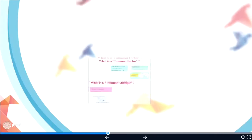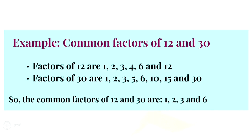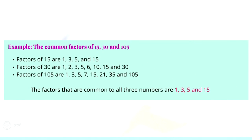In the first exercise you must find the common factors of 12 and 30. First you find the factors of 12, then you find the factors of 30. In exercise 2 you must find the common factors of 3 numbers: 15, 13, and 105. First you find the factors of 15, then the factors of 30, and in the last step the factors of 105. The factors common to all 3 numbers are 1, 3, 5, and 15. The highest common factor from these 4 common factors is 15.